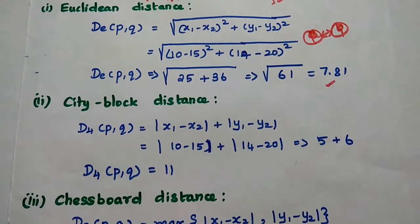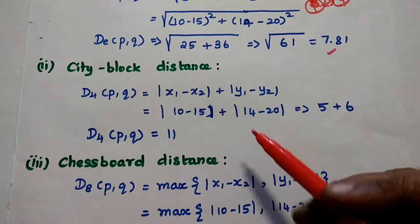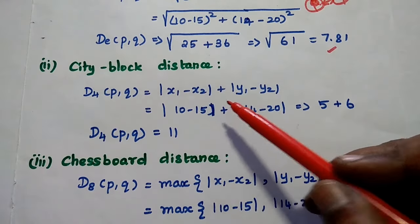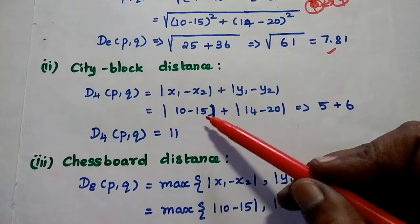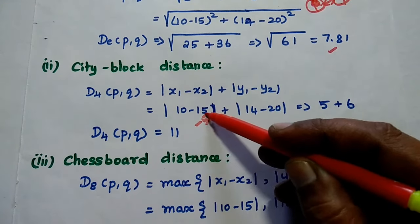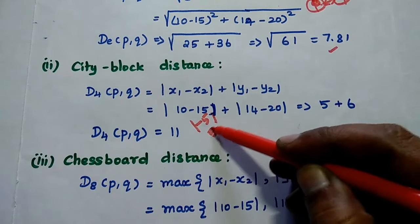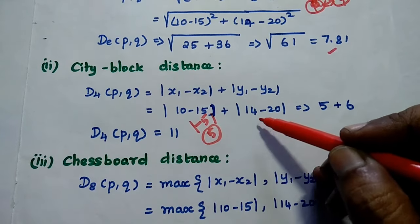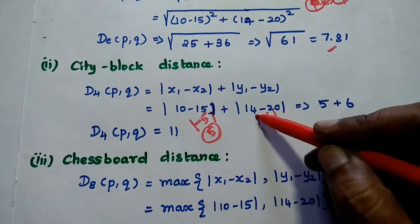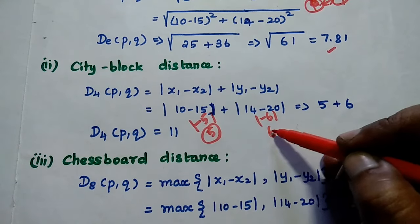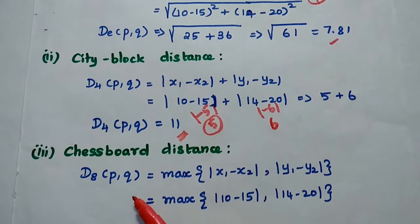The second method is city block distance. Applying the formula: modulus of (x1 minus x2) plus modulus of (y1 minus y2). Here 10 minus 15 is minus 5, and taking the mod gives 5. Likewise 14 minus 20 is minus 6, and taking mod gives 6. So 5 plus 6, the city block distance is 11.